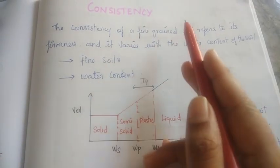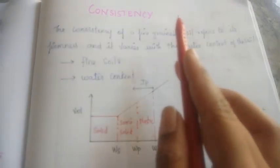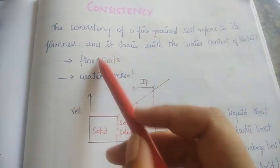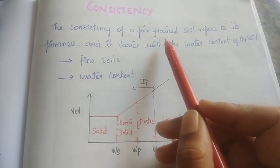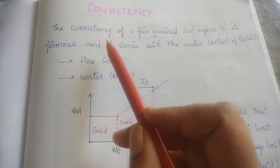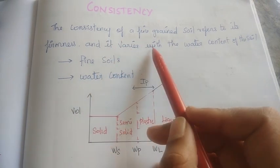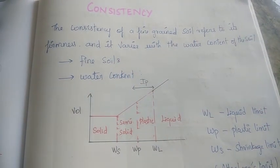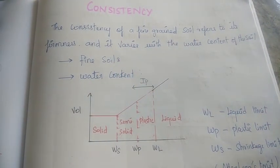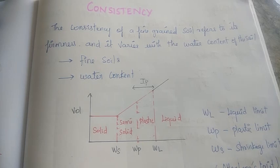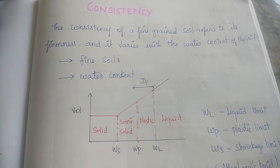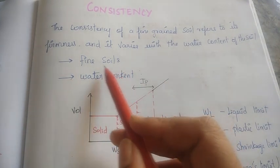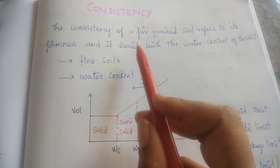Next is consistency. Consistency is important. Consistency of a fine-grained soil refers to its firmness, and it varies with the water content. If we add water content, it shows plasticity. There are fine soils — if we add the water content, we change the consistency.